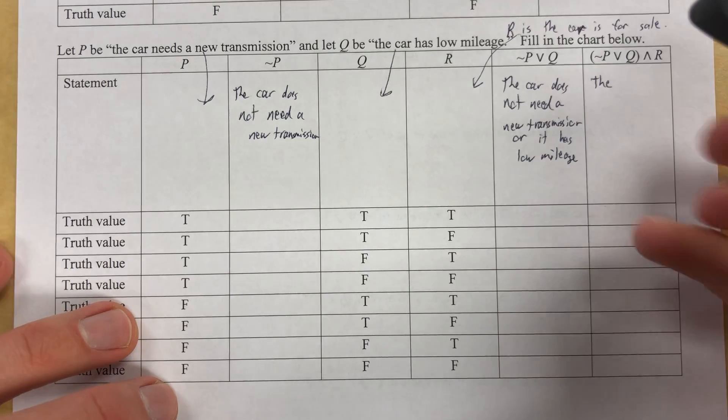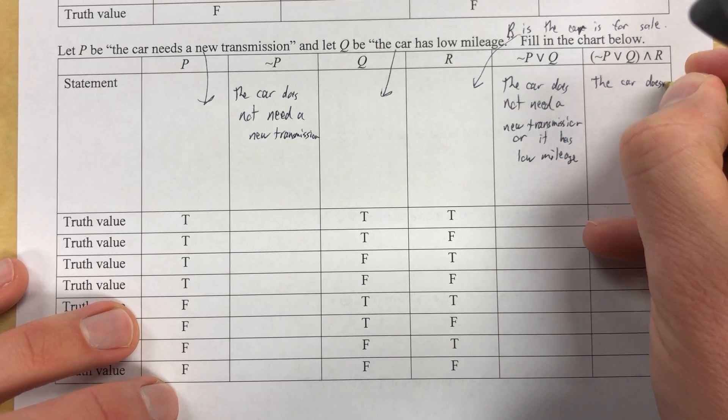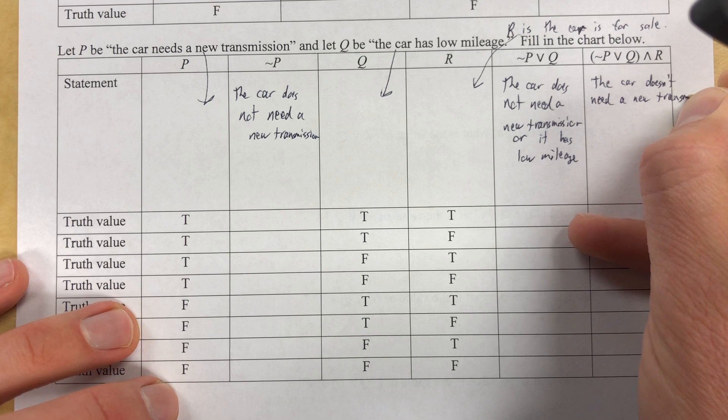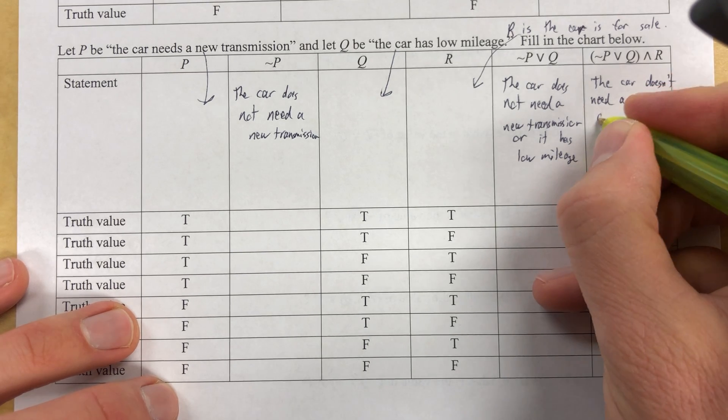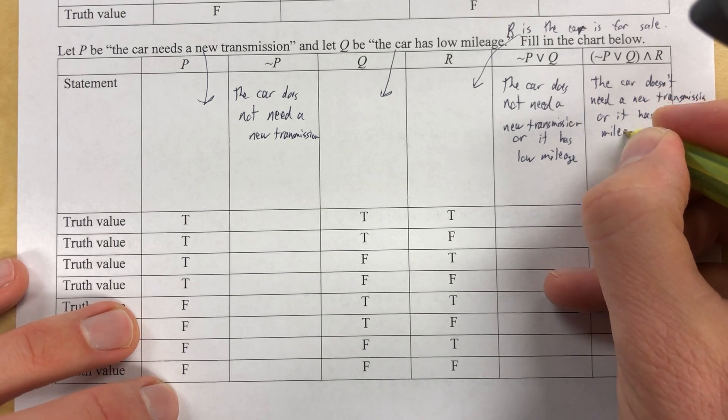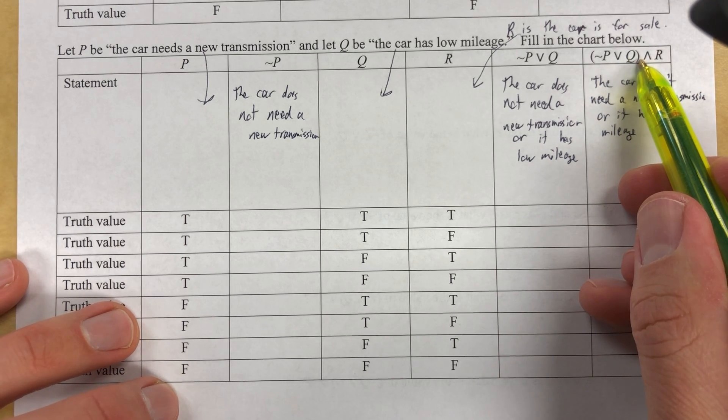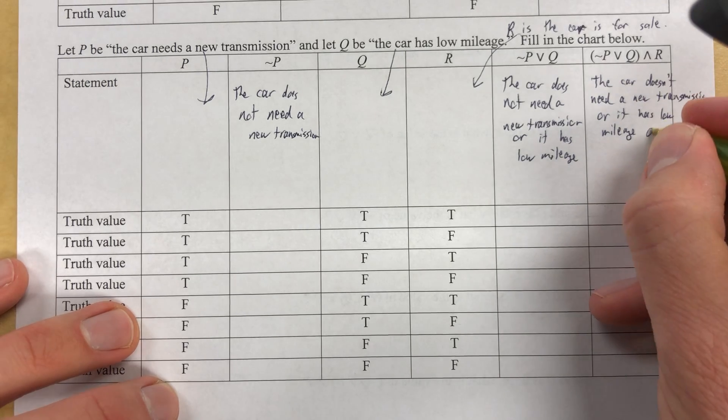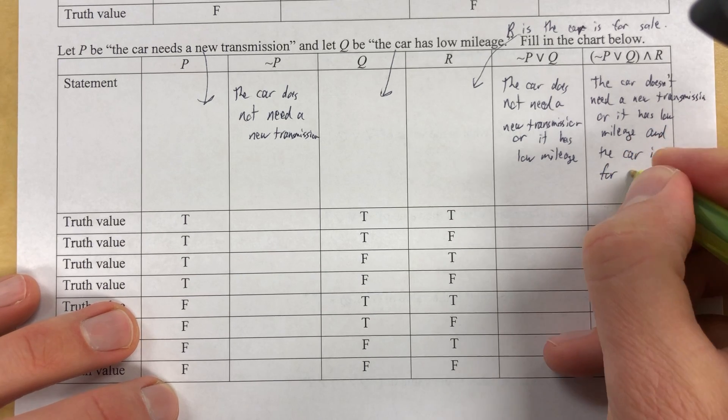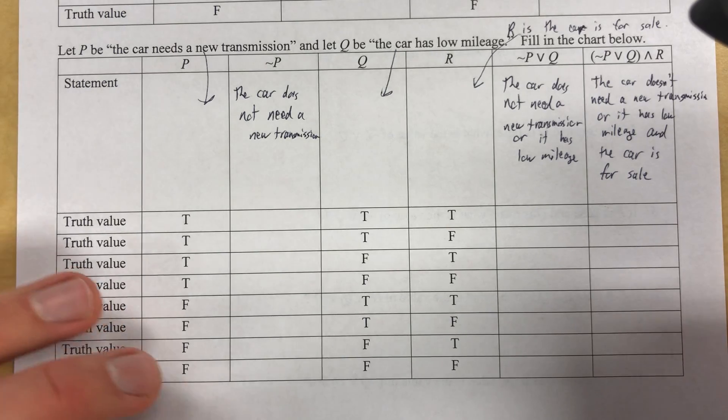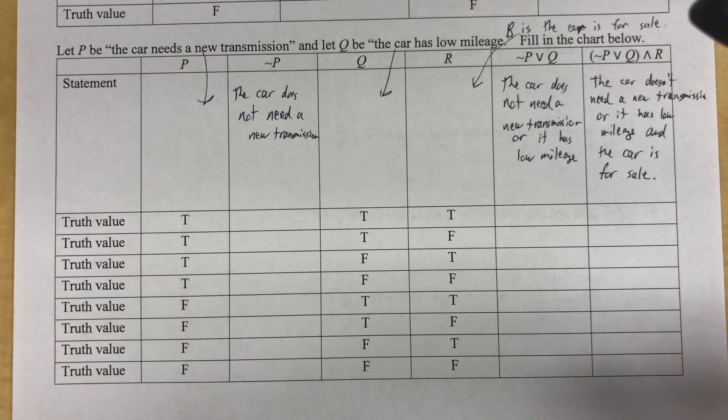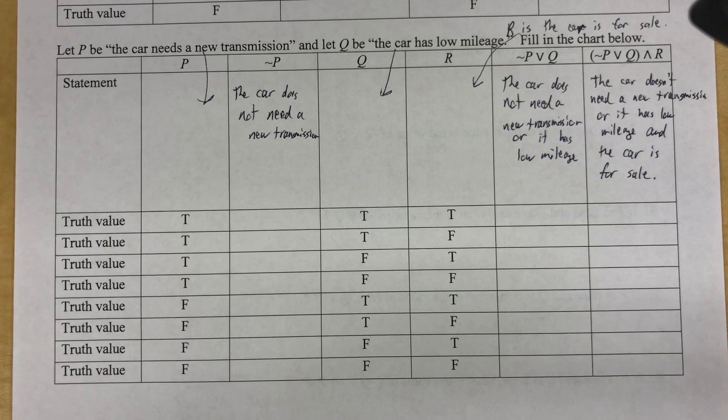So I have to write all this again. I'm really going to go fast. The car doesn't need a new transmission or it has low mileage. Okay. That takes care of us up to here and the car's for sale and for only $14.95. And the car's for sale. All right. Now these two kind of go together, sort of clumped together in the sentence anyway. So we're good to go.